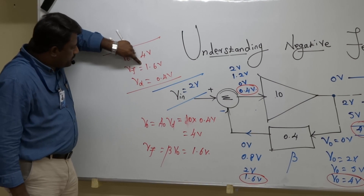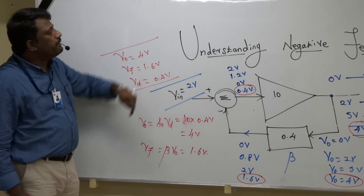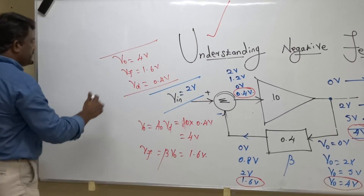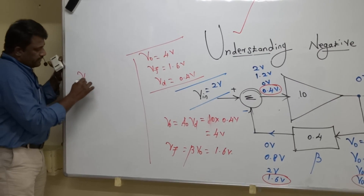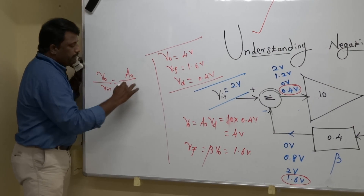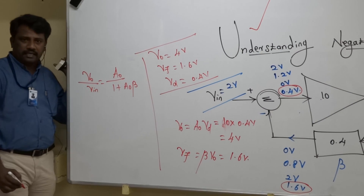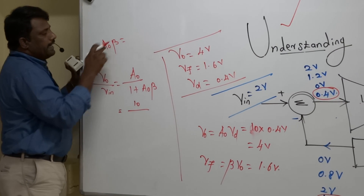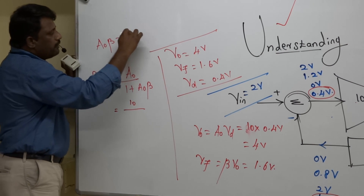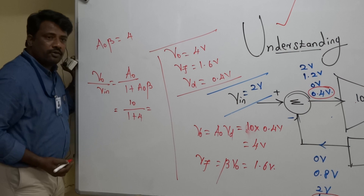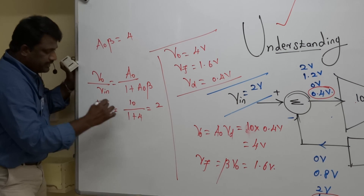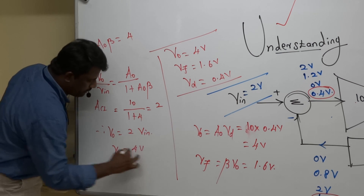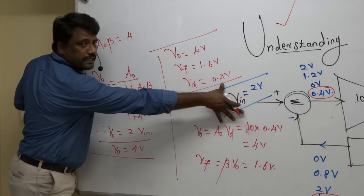That is how negative feedback naturally brings all variables to their steady-state values. This matches the well-known formula: V₀/Vm = A₀ / (1 + A₀·β). Here A₀ = 10 and A₀·β = 10 × 0.4 = 4, so 1 + 4 = 5, giving a closed-loop gain of 10/5 = 2. Therefore V₀ = 2 × Vm = 2 × 2 = 4 volts, confirming the result.